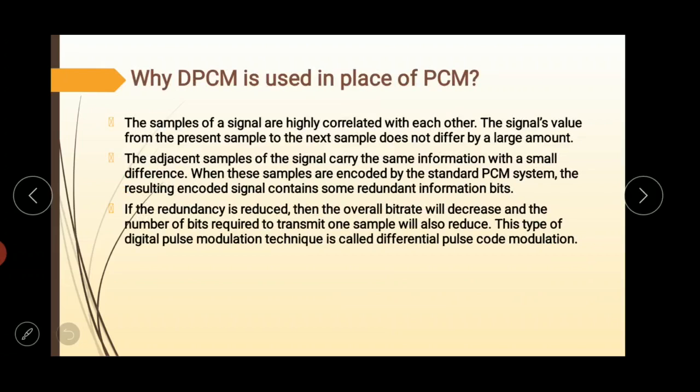Why is DPCM used in place of PCM? As we know, when we convert a continuous time signal into samples, we can observe that samples of a signal are highly correlated with each other. This is due to the fact that generally signal does not change fast. Values from present sample to next sample do not vary by a large amount. The adjacent samples of the signal carry the same information or with a little difference.